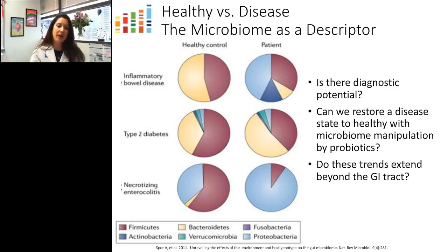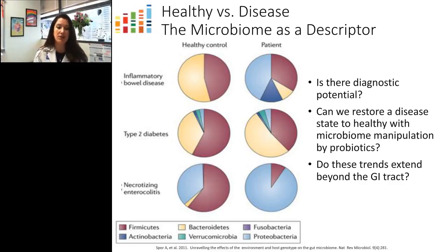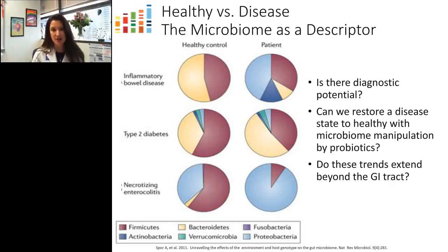Once we could routinely characterize the healthy human microbiome, the next logical question was whether microbiome profiles could differentiate between a healthy and a disease state — and the answer was a resounding yes, especially for the gut microbiome and GI-based diseases. We then began to question whether we could manipulate the microbiome to restore a disease state to a healthy state, and if so, whether those improvements could extend beyond the gut — a question we are still working to answer.